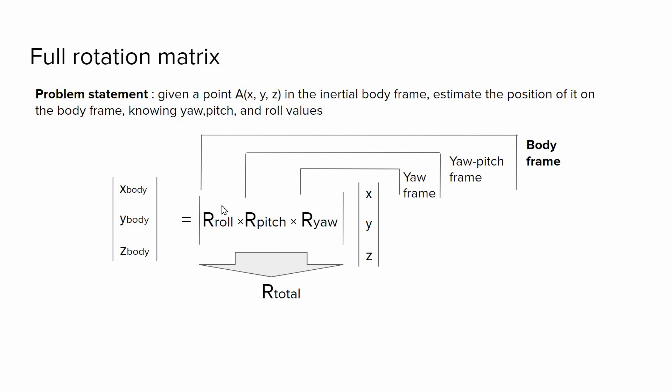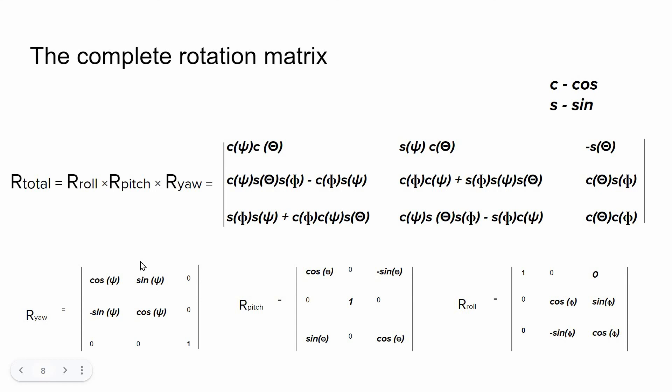So by multiplying all these matrices, we can estimate the full rotation matrix that allow us to map from the inertial frame to the body frame. If we do that calculation, we will end up with these matrix where S and C stands for sine and cosine.